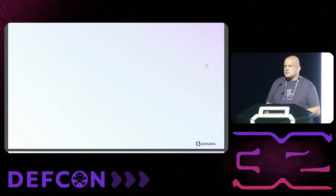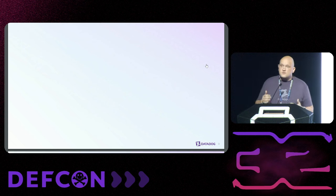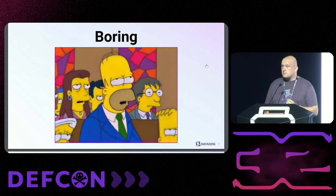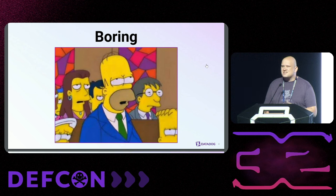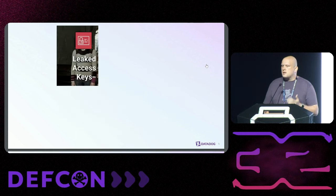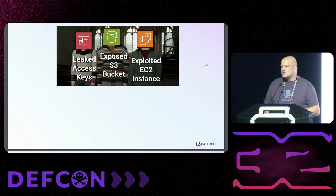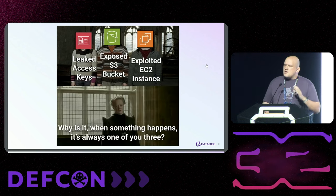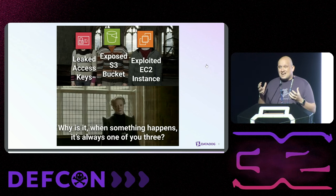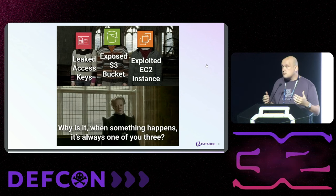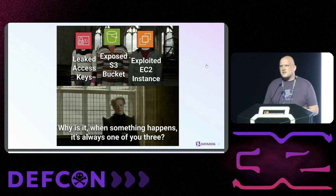Breaking into AWS accounts is near and dear to my heart, but if we're being honest, the traditional methods for gaining access to AWS environments are boring. If we were to poll the audience for real-world AWS breaches, compromises, and other security incidents, I guarantee 95% of scenarios would fall into one of three categories: a leaked access key, an exposed S3 bucket, or an exploited EC2 instance. These are the stereotypical ways adversaries gain access to AWS accounts — very real risks, but nothing you haven't seen before. These methods are boring.